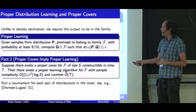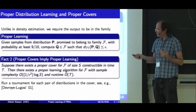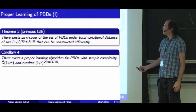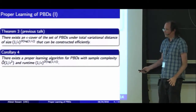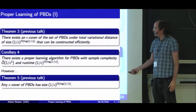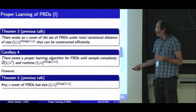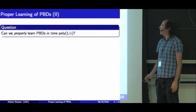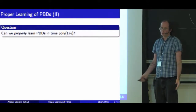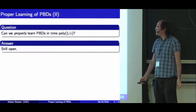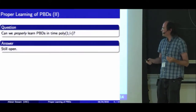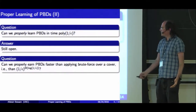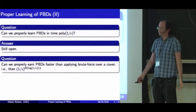We also gave an algorithm using proper ε-covers, which had running time 1/ε^(log 1/ε), which is not that efficient. We know, because we also had a cover size lower bound, that we can't do any better with this approach. So the obvious question is: can we properly learn Poisson binomial distributions in polynomial time? The answer is we don't know, but the next question is: can we do better than this brute-force 1/ε^(log 1/ε)?